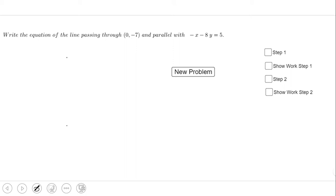The line is passing through (0, -7). The first step is to find the slope of the given line, and to find the slope, we need to solve for y.